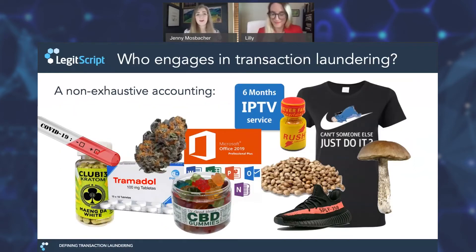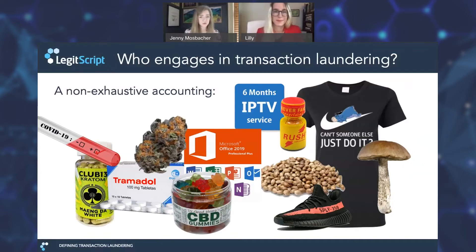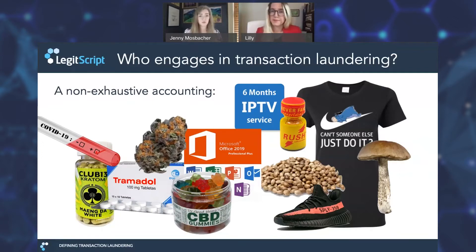This is a non-exhaustive accounting of a few examples of products sold by merchants we have found to be engaged in transaction laundering. Not all the products are going to be illegal per se, but as soon as a merchant is engaging in transaction laundering — which is basically money laundering — they start to pose a more outsized risk to the integrity of the payments ecosystem. They have effectively made the situation more illegal and worse for themselves, even if they're selling something as seemingly innocuous as CBD.